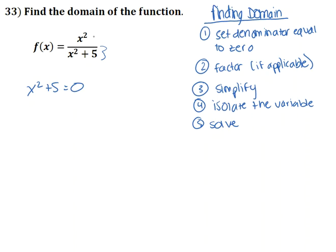So we're going to go ahead and simplify and isolate for our variable, which is x. To do that, we're going to subtract 5 from the right-hand side to move it over to the left. So we'll get x squared is equal to negative 5.